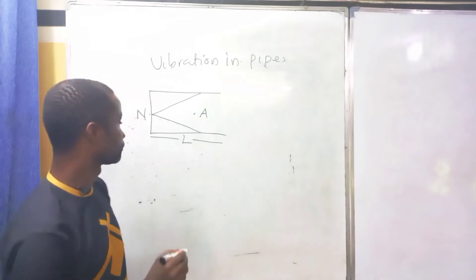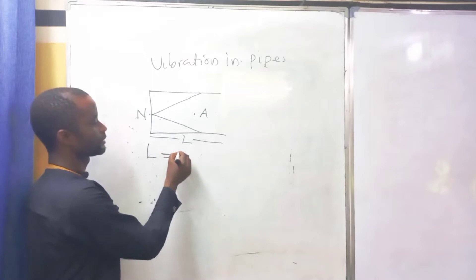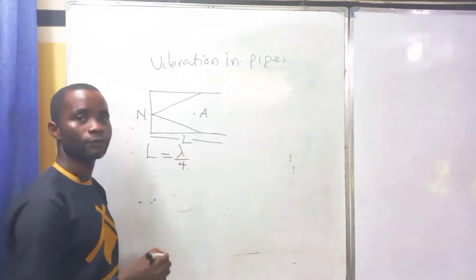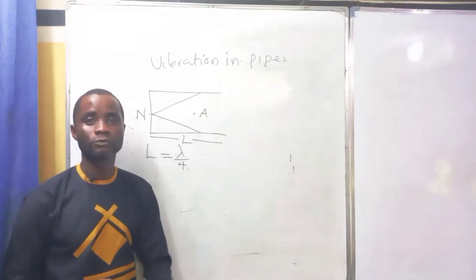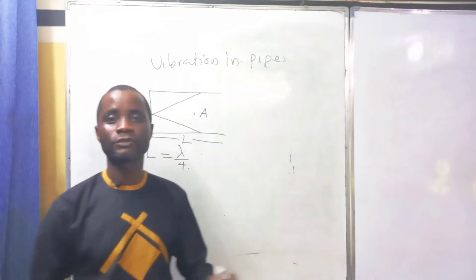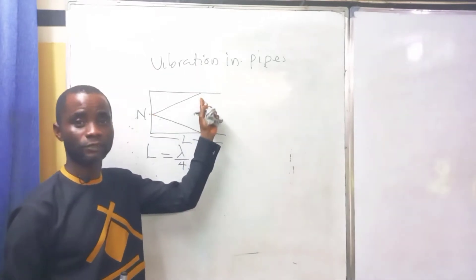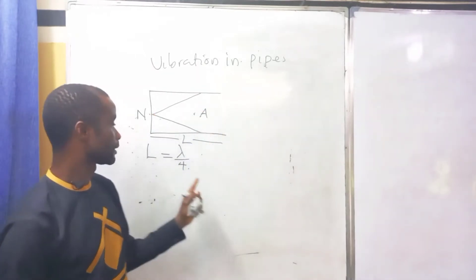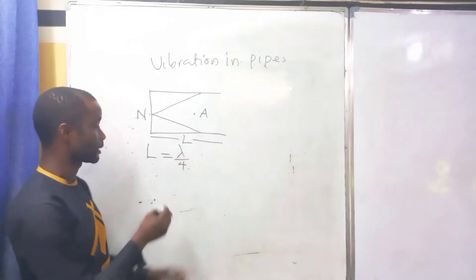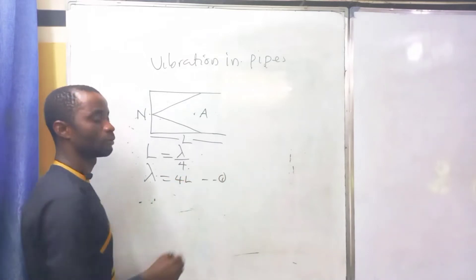Now let's look at what L represents. L represents lambda over 4. Why do you have lambda over 4? Because this is one segment of the wavelength. The wavelength is the distance between two successive crests, and this is just one segment of that. So we have L is equal to lambda over 4. Making lambda the subject gives lambda equal to 4L. We'll call this equation 1.